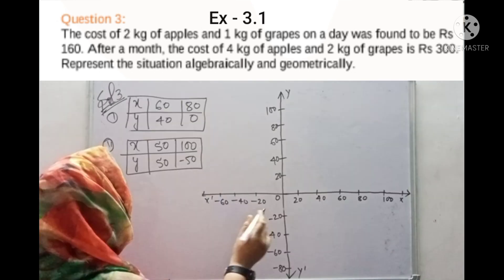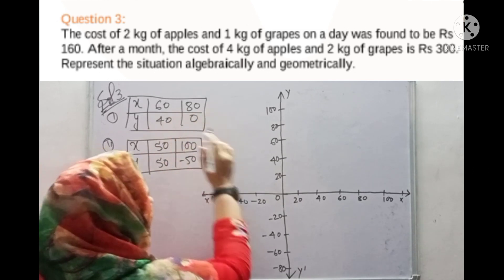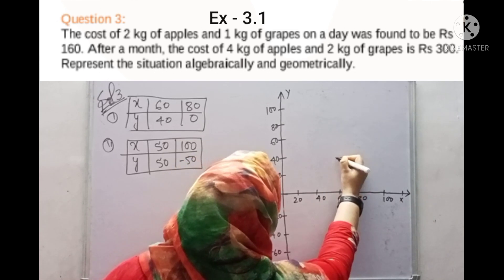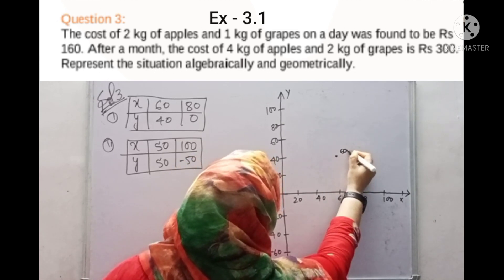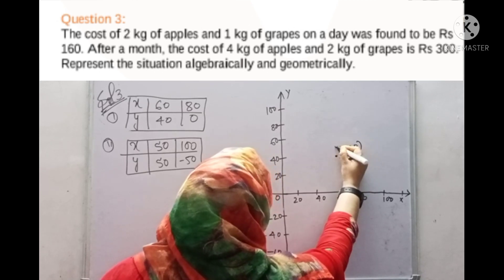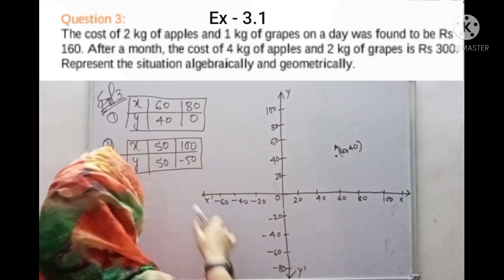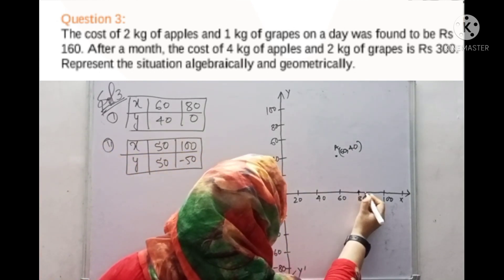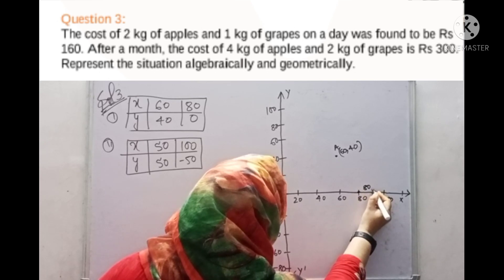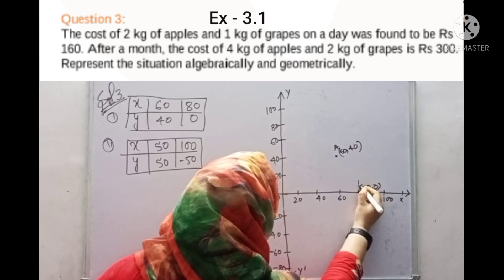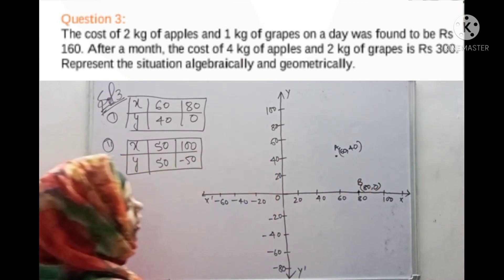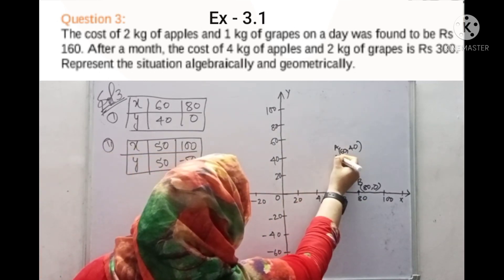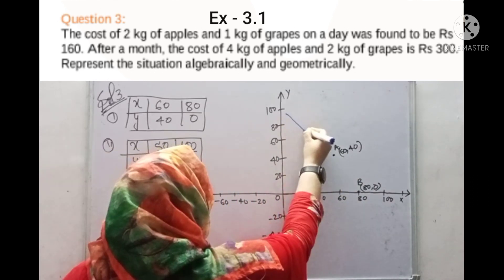Now let's proceed. For the first equation, if x = 60 then y = 40 — we represent this as point A. If x = 80 then y = 0 — this is point B. We join both these points to draw the line for the first equation.